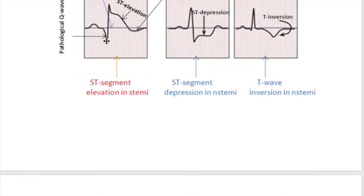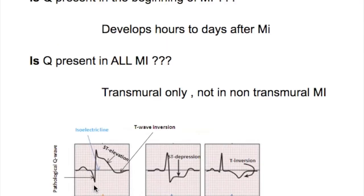Not all myocardial infarctions have Q waves. In STEMI, a Q wave is present only when there is complete obstruction of the blood vessel. If there is incomplete obstruction, it causes only ST depression or T-wave inversion — this is NSTEMI, which does not have a Q wave. The Q wave is present only in transmural MI with complete obstruction, and absent in non-transmural MI.